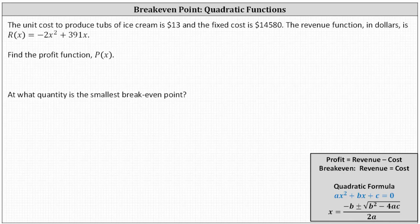The unit cost to produce tubs of ice cream is $13, and the fixed cost is $14,580. The revenue function in dollars is r of x equals negative 2x squared plus 391x. We're asked to find the profit function, p of x, and then at what quantity is the smallest breakeven point.